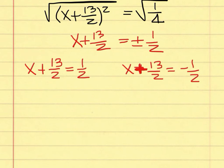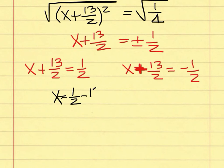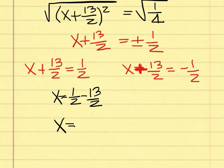Solving the left-hand side equation first: a student answers x equals 1 over 2 minus 13 over 2. That is right. 1 over 2 minus 13 over 2 gives negative 12 over 2, which equals negative 6. For the right-hand side equation: move the 13 over 2 to the right and make it minus 13 over 2. Negative 1 over 2 minus 13 over 2 gives negative 14 over 2, which equals negative 7.